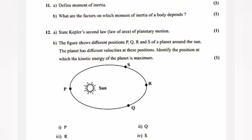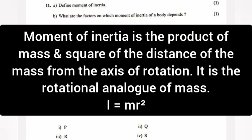Question 11a: Define moment of inertia. Answer: Moment of inertia is a product of mass and square of the distance of the mass from the axis of rotation. It is the rotational analog of mass. I is equal to mR square.